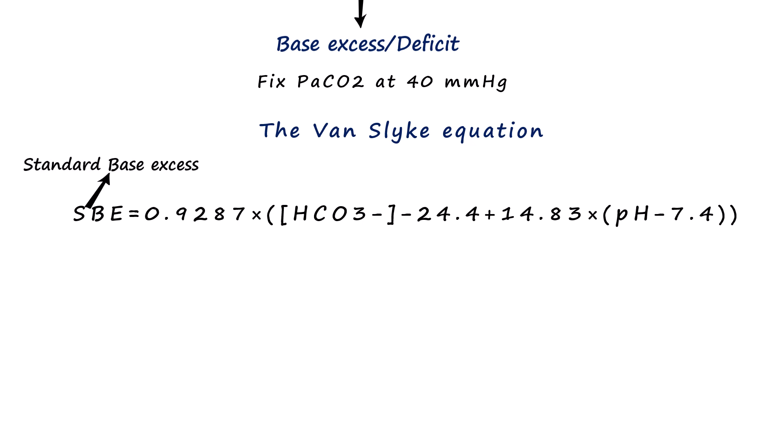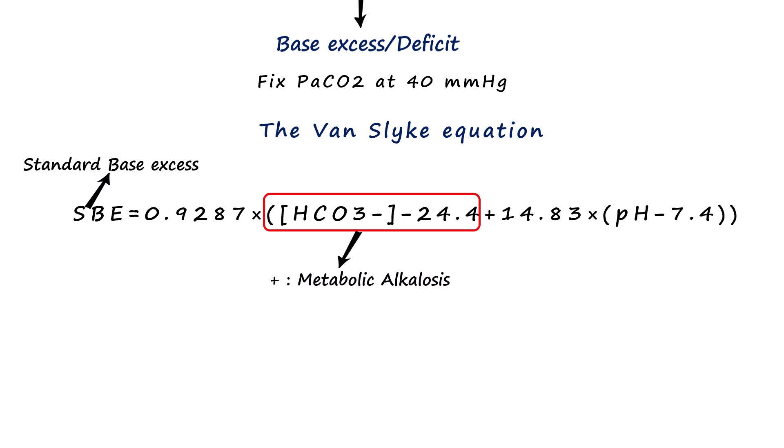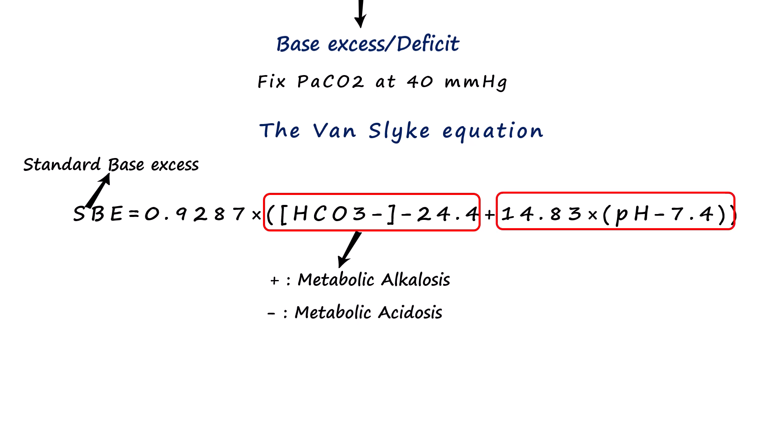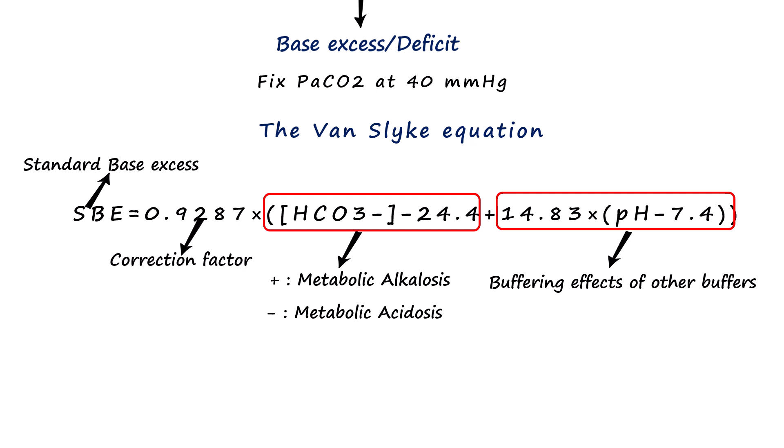This equation compares the patient's bicarbonate level to the normal value, where a positive value suggests metabolic alkalosis and a negative value suggests metabolic acidosis. The last part of the equation adjusts for the non-bicarbonate buffer effect from buffers like proteins, phosphates, and hemoglobin. The 0.9287 at the start of the equation is just an empirical correction factor derived from experimental data to improve accuracy.